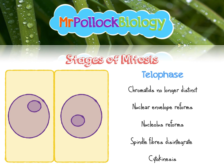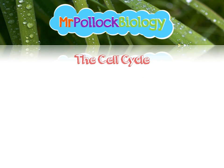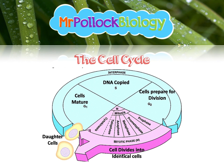If we look at the whole cell cycle, we see that interphase is massive. We've got the G1 first growth phase, the synthesis phase where the DNA is copied, and the second growth phase where the cells are preparing for division. Then only about 25% of the cell cycle is actually the mitosis, the division phase.